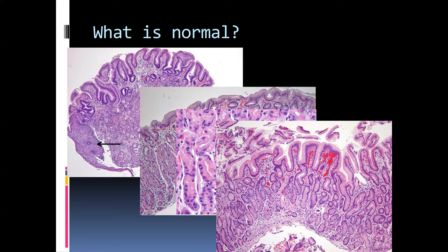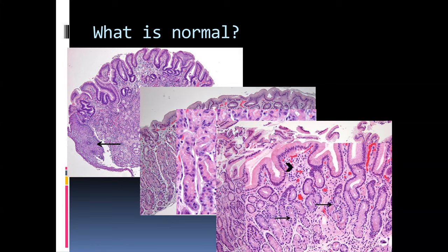Moving further down, in the antrum the story is a little different. We see only foveolar epithelium and mucinous epithelium without any evidence of chief or parietal cells. Note that the ratio between the superficial foveolar epithelium and the glandular component is about one to three. The characteristic feature here is the presence of occasional enterochromaffin cells, which appear as occasional clear cells within the antral glandular structures. There is very minimal inflammation in this mucosa.